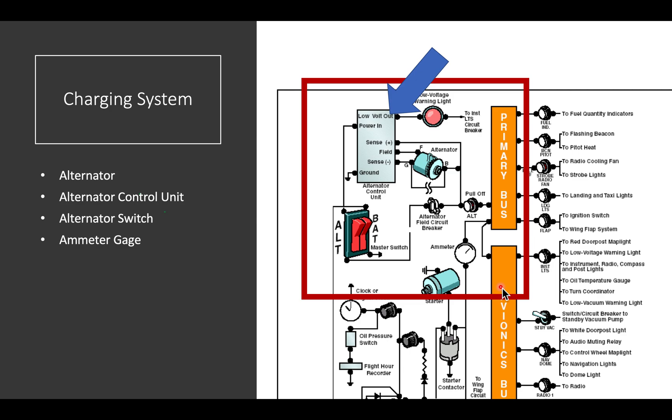There's an alternator control unit, which is also called a voltage regulator, that regulates how much the alternator puts out, so that it's just enough to run everything without producing too much electricity and burning your radios out. There's the switch, which we use to turn the system on and off. And there's an ammeter gauge, often associated with a warning light, to let you know whether the system is operating normally or not.